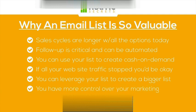You have more control over your marketing by having an email list, especially when you automate things. You can control in what order your prospects see different things from you. When you just have a website, people bounce around to different pages in whatever order they want, coming back on whatever day they want — you don't really have control over that.